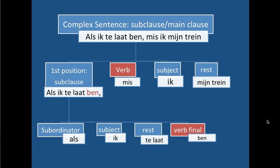To put it in a tree structure: 'Als ik te laat ben, mis ik mijn trein.' The first position is taken on by the subclause 'als ik te laat ben.' Here is the subordinator 'als,' all the verbs are kicked to the end of the clause, and then you have to have the inversion. So it's followed by the verb, then subject — this is the inversion. 'Mis ik mijn trein.'